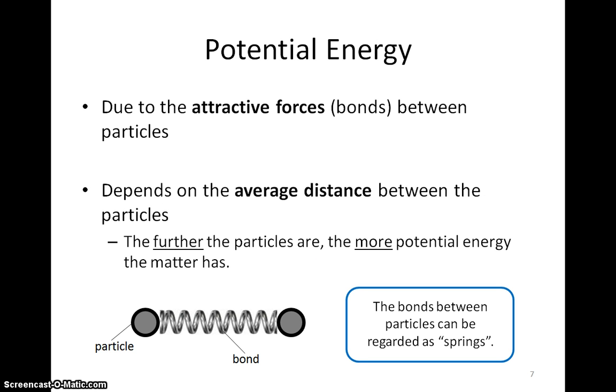Potential energy is due to the attractive forces or bonds between the particles. The amount of PE of the matter depends on the average distance between the particles. The further the particles are, the more PE the matter has.